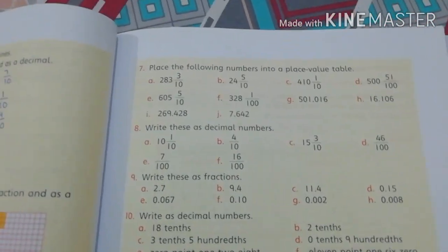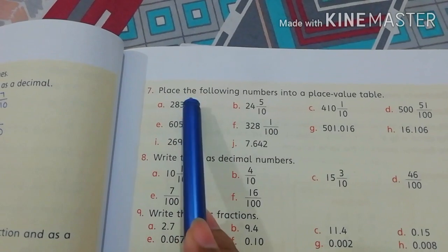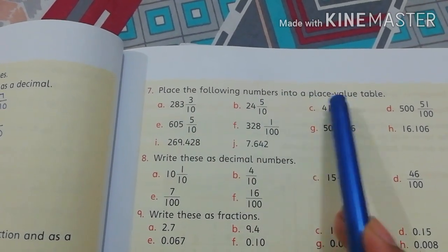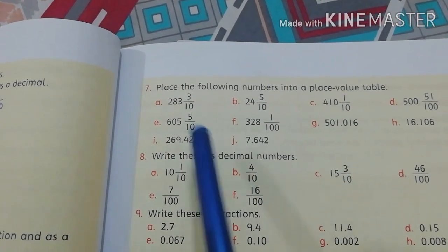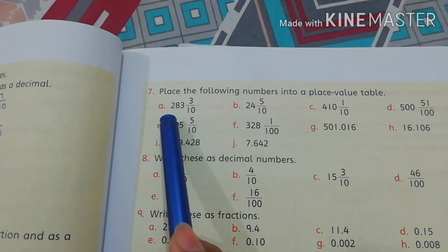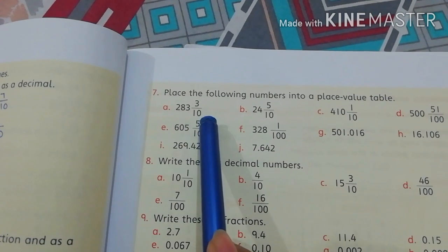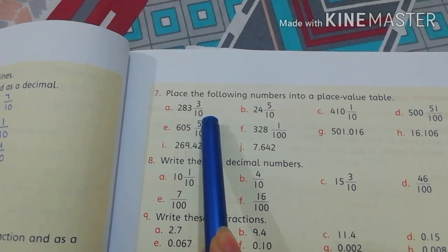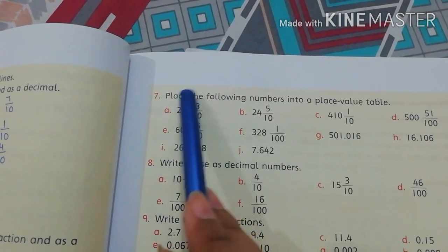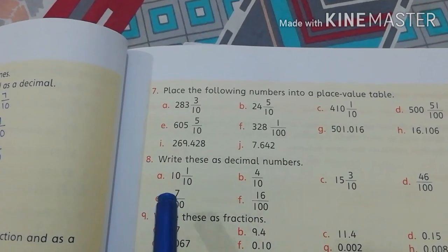Now question number 7 is, place the following numbers into a place value table. Part A: 283 whole 3 by 10. Dear students look, this is mixed fraction. How we convert mixed fraction into decimal? Let's check.